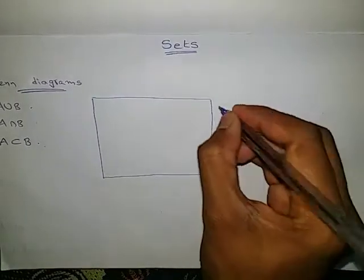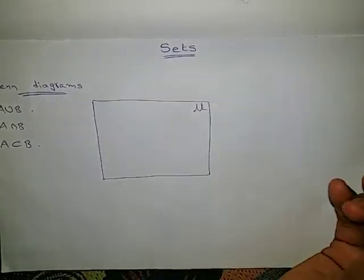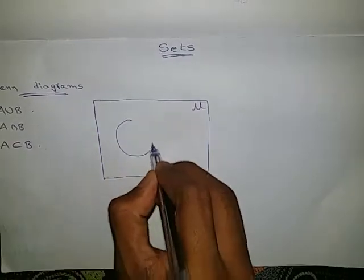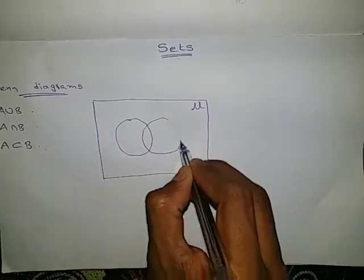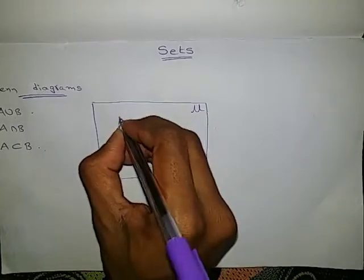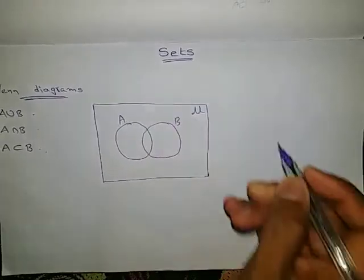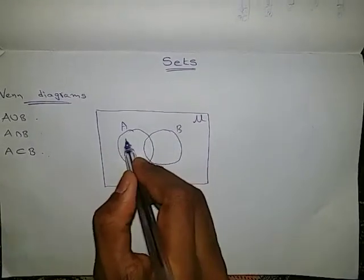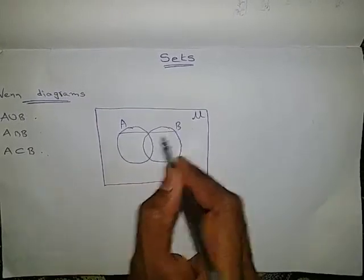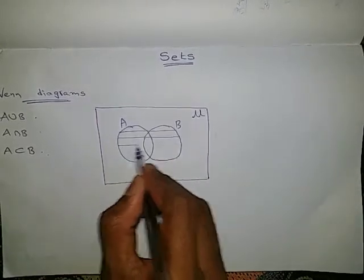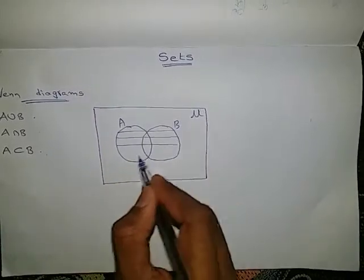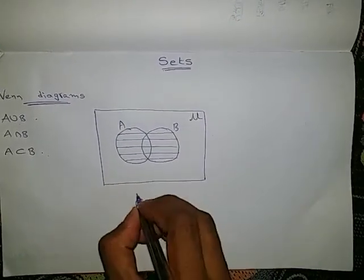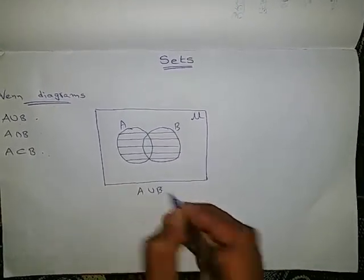This total will become the universal set, in which there are two sets A and B. Here is A, here is B — those two are sets. Now they are asking about union, which is nothing but together — the joint total of A as well as B together. This is the Venn diagram for A union B.